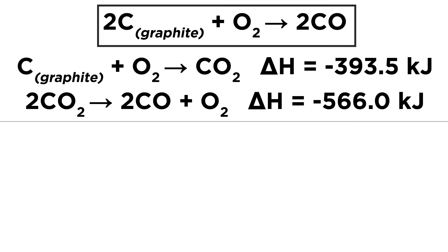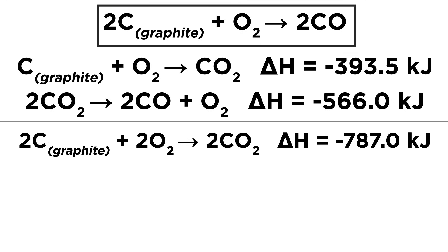The first reaction provided has carbon graphite on the left, which is where we want it, but the equation we want has two moles of graphite, so let's double this one. We get two moles of everything instead of one, and we double the delta H.